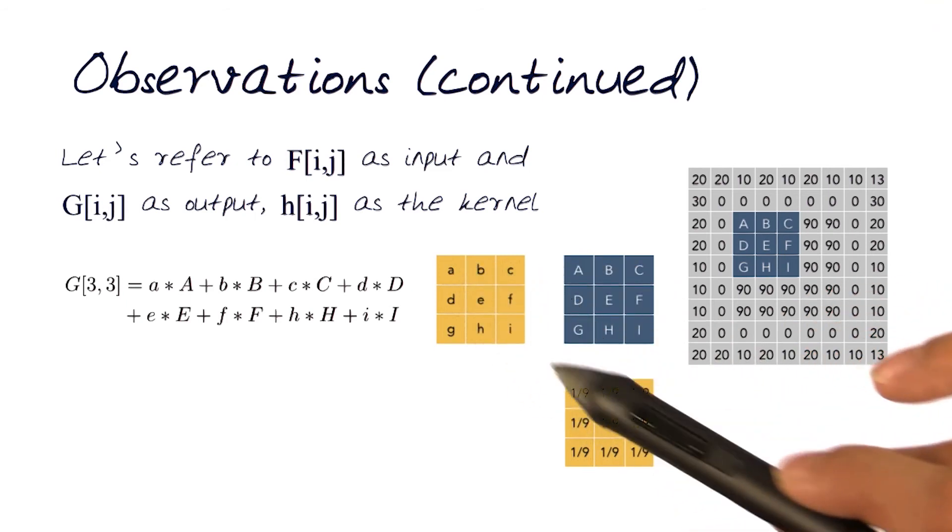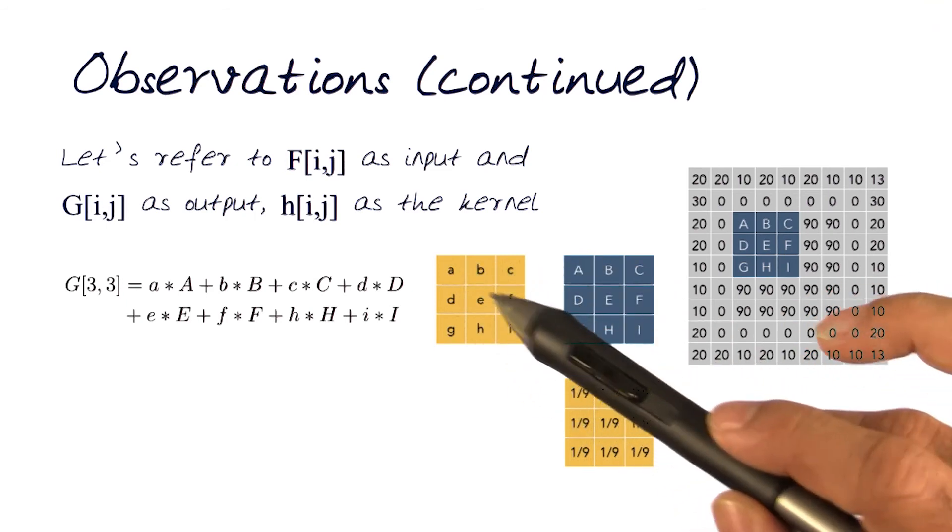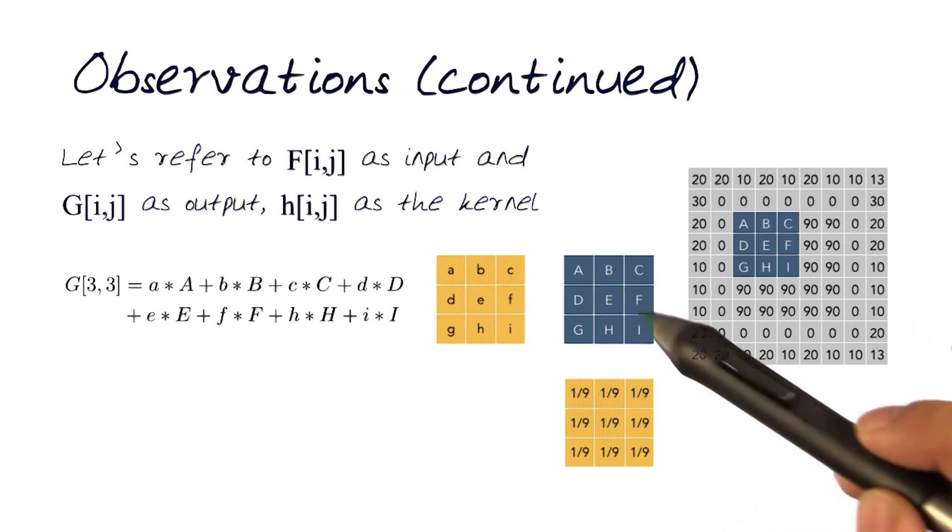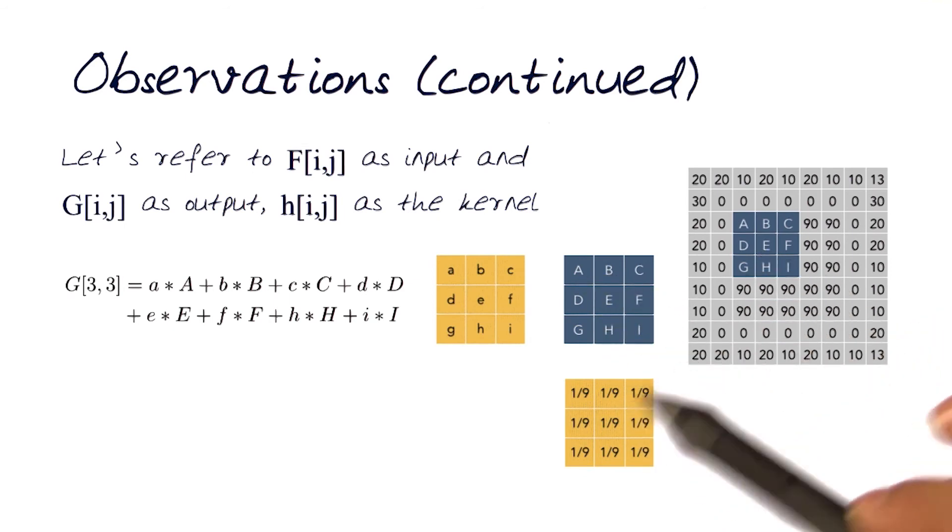So right now, to do an average, my kernel would just be 1 over 9, 1 over 9, 1 over 9, same values in all 9 elements. So now if I do 1 over 9, and this is my image here, of course, the averaging would be best defined by this equation.